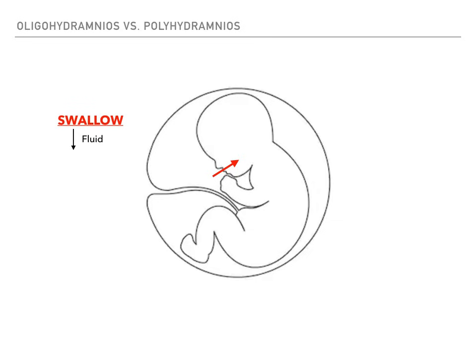What's the way of getting fluid out from the baby back into the amniotic space? That would be the baby urinating. Baby can swallow and decrease the fluid, or baby can urinate, moving fluid from the baby into the amniotic space, thereby increasing fluid. Amniotic fluid can move from the amniotic space into the baby via swallowing, or increase in the amniotic space via urination.